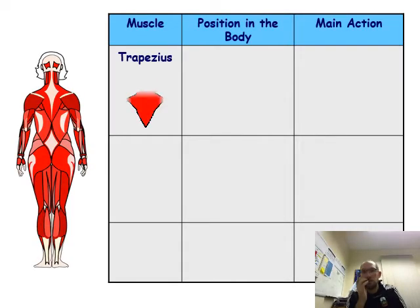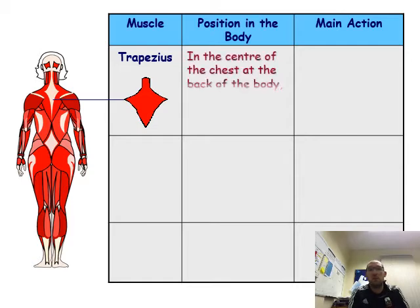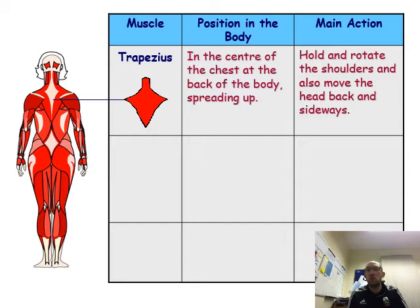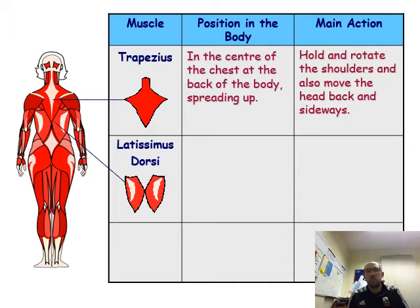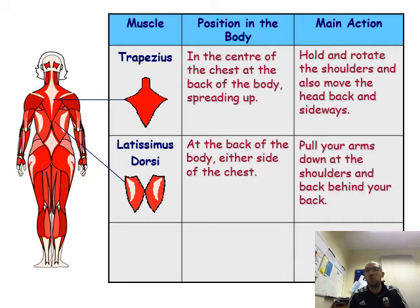The trapezius is at the top of the back — it holds and rotates the shoulders and moves the head back and side to side. It's important because it operates the first class lever. The latissimus dorsi is at the back of the body either side of the chest and pulls your arms down at the shoulders and back behind your back.